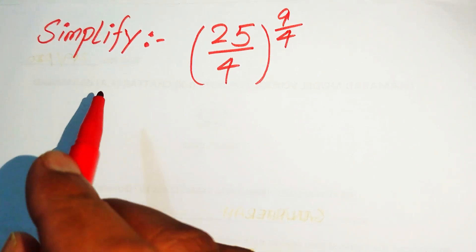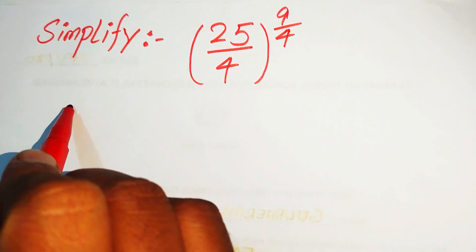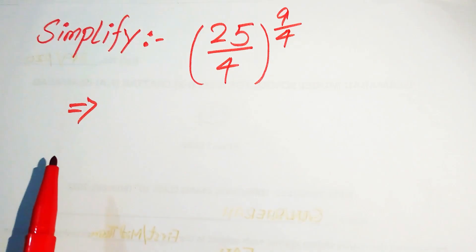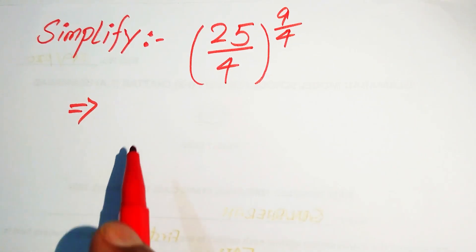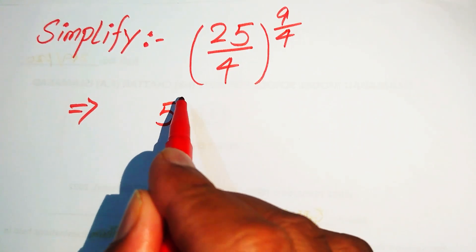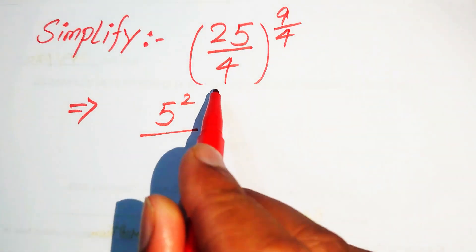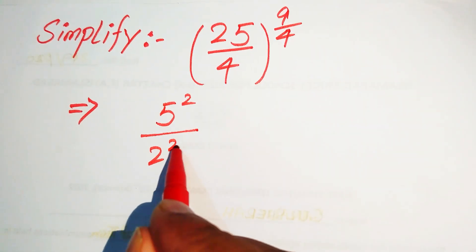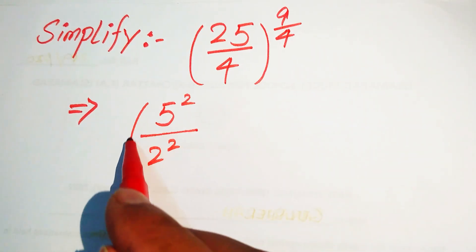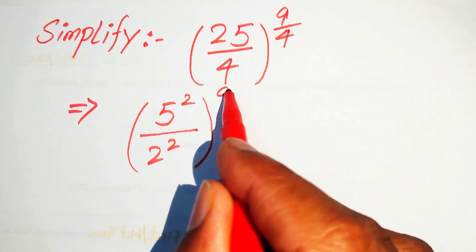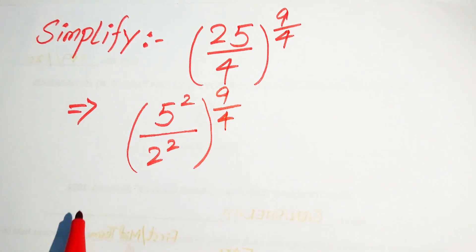The very first step we are going to do is rewrite 25 as 5 squared and we write this 4 as 2 squared, and its whole power is 9 divided by 4.